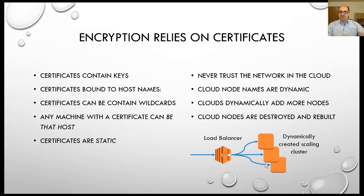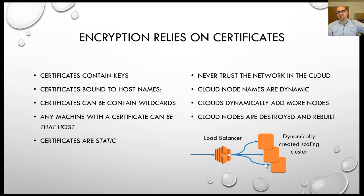Cloud names are dynamic. You can dynamically add more nodes — they can be destroyed and rebuilt. You're probably not going to create DNS entries for all of those C-names or anything like that. The cloud will create DNS entries so you can find the nodes individually and they can be plugged into load balancers. But the net is you tend to manage your certs at the load balancer level, and then you let the cloud manage any encryption or certificates on the dynamic nodes in its own way.